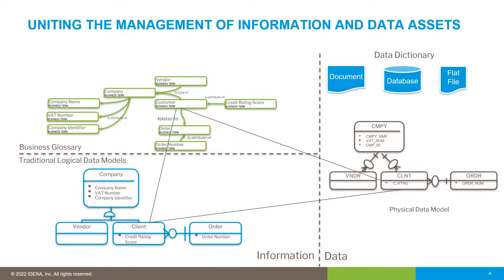Within the tool there are three sections. On the right is the technical data dictionary, where you can model the schema of each data asset. For example, a relational database with tables like CLNT and columns like C_RTNG — we don't know what those mean. So we use logical data models, entity-relationship diagrams in business-friendly language, with descriptions and markup to describe the requirements and meaning of the data. At the top is the business glossary, where data stewards define terms, definitions, and policies.